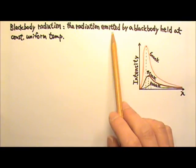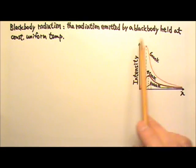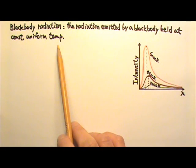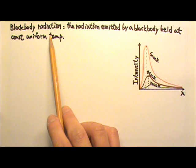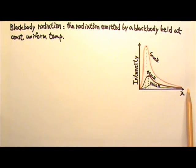The radiation emitted by a black body held at a constant uniform temperature is called black body radiation. Black body radiation has a continuous spectrum, meaning its radiation contains all frequencies, which means all wavelengths within a certain range. If I plot the intensity versus wavelength graph, it will look like this.